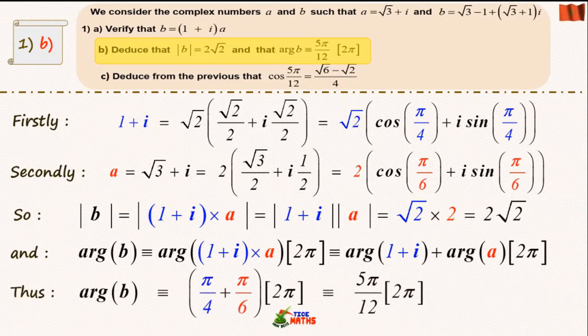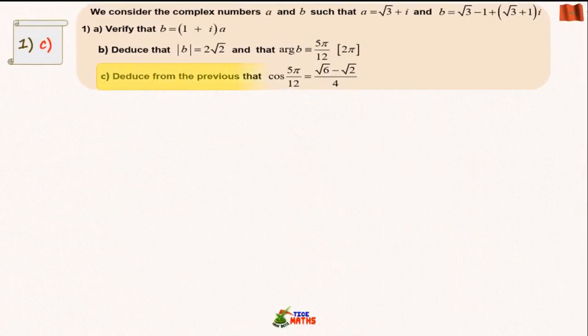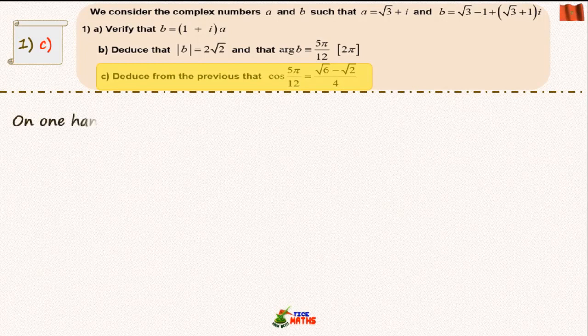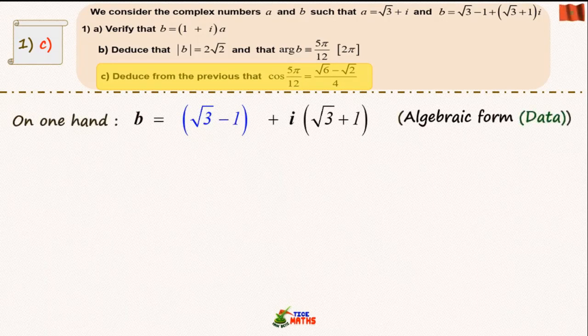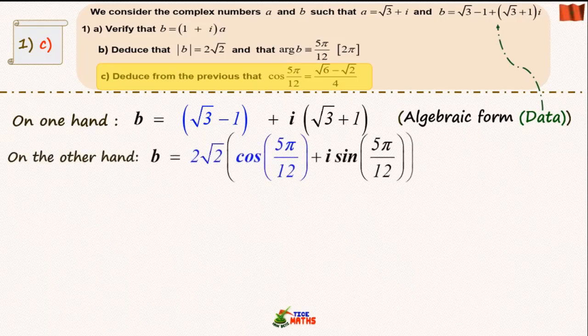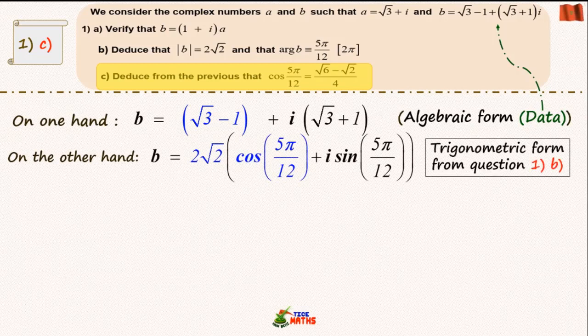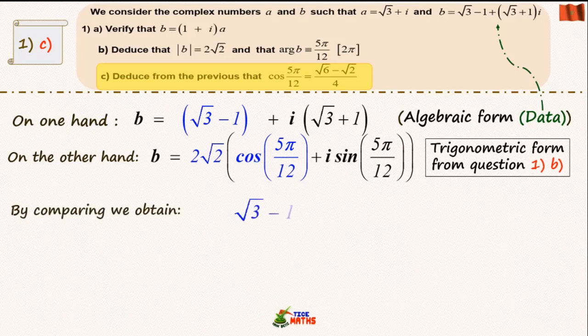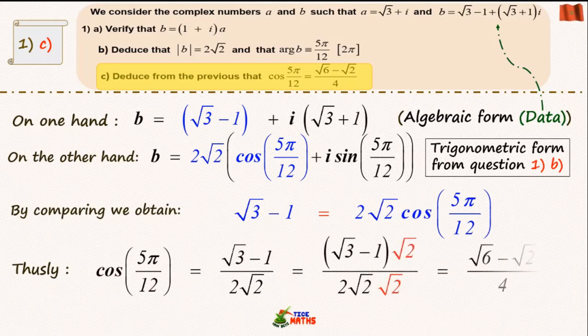Question 1c: complex number b is already written in its algebraic form from data, and we can also obtain its geometric form using the previous question. We have to compare the real parts of the two forms in order to obtain the asked value of cosine 5π over 12.